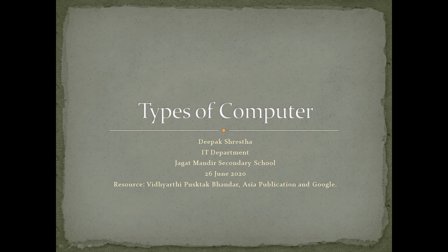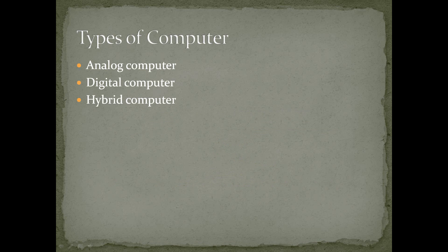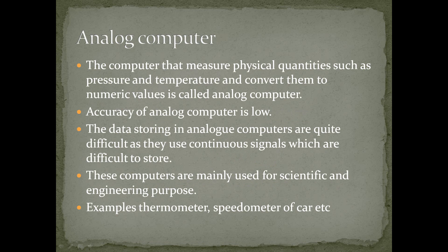Types of computer: analog computer, digital computer, hybrid computer. The computer that measures physical quantities such as pressure and temperature and converts them to numeric values is called analog computer.